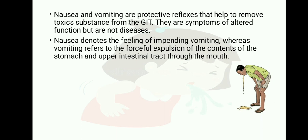Nausea and vomiting are protective reflexes that help to remove toxic substances from the GIT. They are the symptoms of altered function but not diseases. Nausea denotes the feeling of impending vomiting, whereas vomiting refers to the forceful expulsion of the contents of the stomach and upper intestinal tract through the mouth.